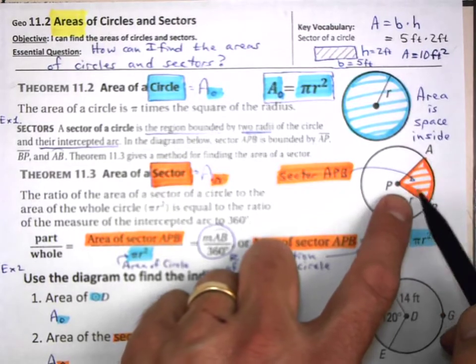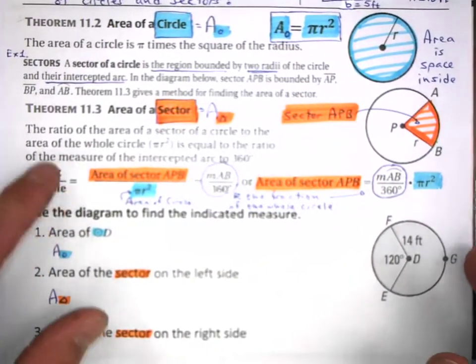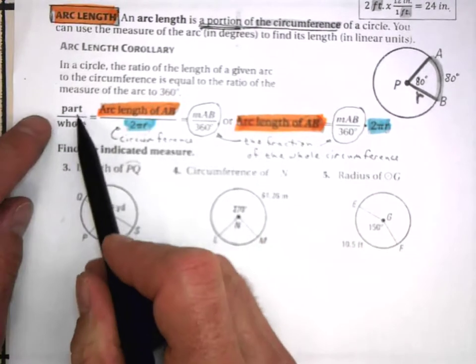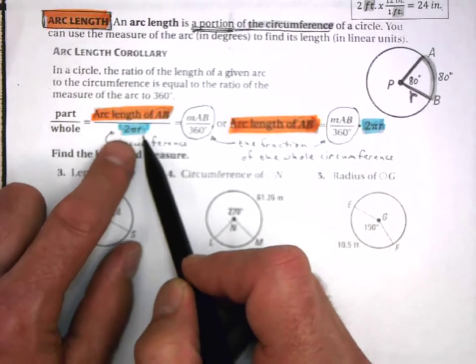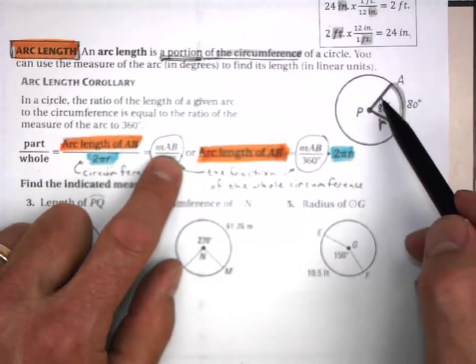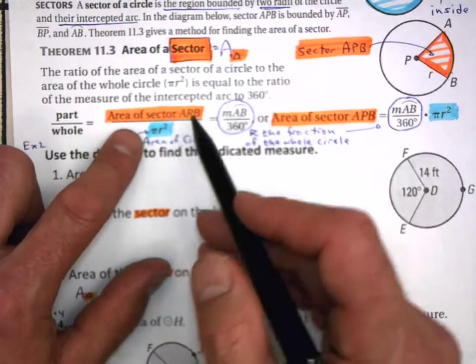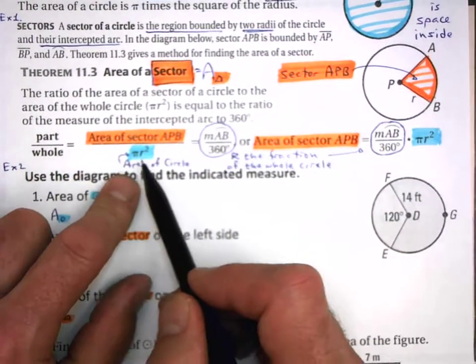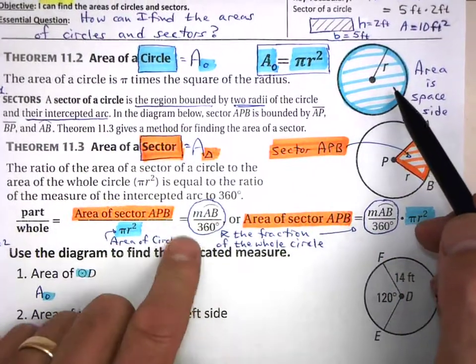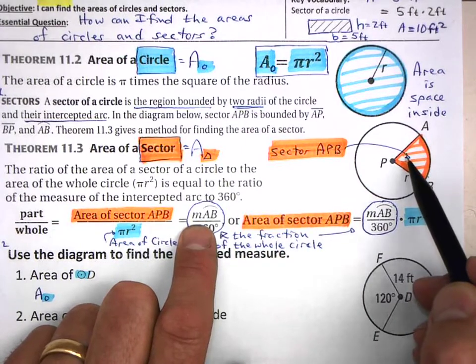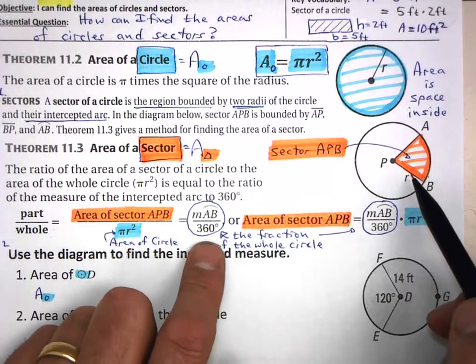The area of a sector uses the same basic principle we used when finding arc length. Remember: arc length over whole circumference equals the central angle over 360. Same principle here — the area of this sector over the area of the entire circle equals the ratio of the measure of this central angle over 360 degrees.